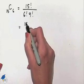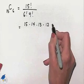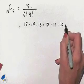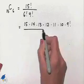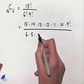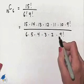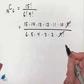Continuing on, we'll have 15 times 14 times 13 times 12 times 11 times 10 times 9 factorial, and we're going to divide that by 6 times 5 times 4 times 3 times 2 times 1 times 9 factorial. Our 9 factorial will divide out.